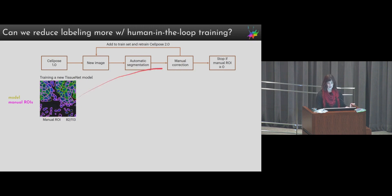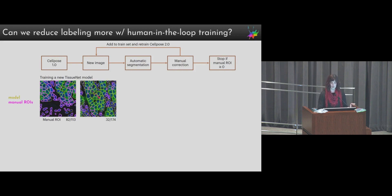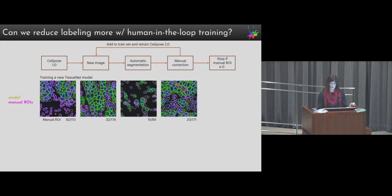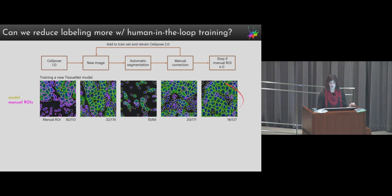After you do this manual correction, we retrain CellPose just on that one image, and things don't look so bad on the second image. When you run CellPose on the second image in your training folder, there aren't as many to correct — only 32 ROIs out of 174 need to be redrawn. Now we retrain the model iteratively: with two training images we again don't need to label too many, then with three images we label even fewer as a fraction, and once we've trained on four images there are very few corrections the user has to make.